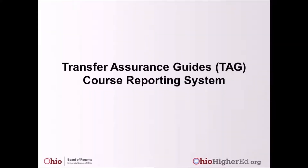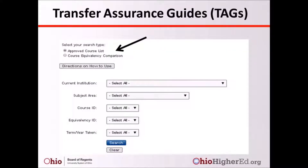To navigate to the Transfer Assurance Guide reporting system, click on the TAG Transfer Assurance Guide Course Reporting System link. There are two different search types for TAG courses: the first is searching through the approved course list, and the second is comparing course equivalencies. The approved course list provides data on existing TAG statewide guarantees by major area, institution, and courses, whereas the course equivalency comparison can be used to search for TAG equivalencies between institutions.